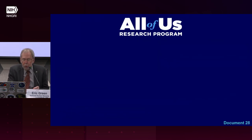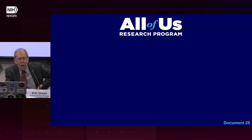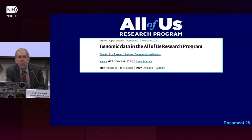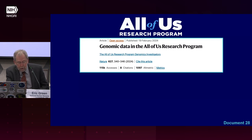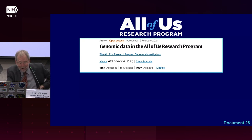Moving on to the All of Us Research Program: All of Us is seeking to build a national research cohort of over 1 million participants reflecting the diversity of the United States, creating a partnership with participants to advance precision medicine and change healthcare to the benefit of all. This past February, the program published several papers in the Nature Portfolio of Journals. In the flagship publication, All of Us investigators described the generation and release of nearly a quarter of a million genome sequences, 77% of which are from historically underrepresented communities. The accompanying analysis revealed nearly 275 million previously unreported genomic variants, and this paper sparked important conversations on the presentation of genetic ancestry data alongside social identity labels and data visualization techniques.